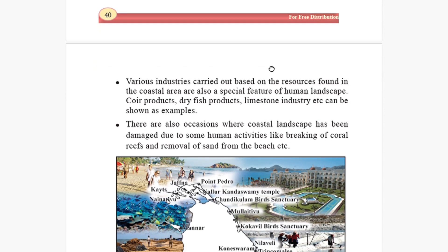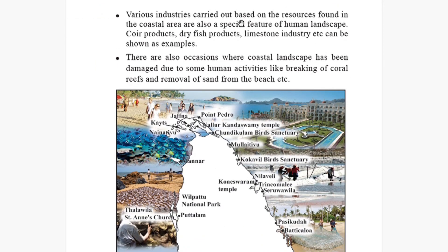The various industries carried out based on the resources found in the coastal area are a special feature of the human landscape. There are various industries — especially coir products, dry fish products, and the limestone industry — shown as examples. These are very important products of the coastal region.